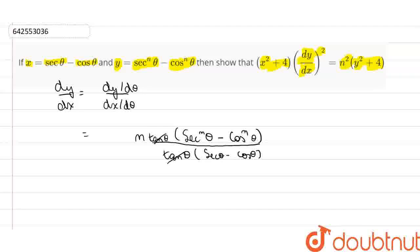So, we get dy by dx is equal to n into sec nθ minus cos nθ is y, right? And sec θ minus cos θ is x. So, dy by dx is equal to n into y by x.